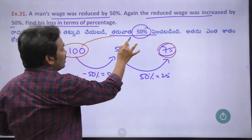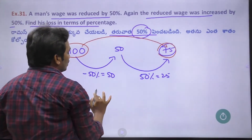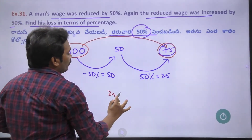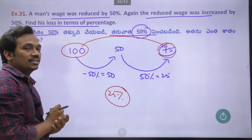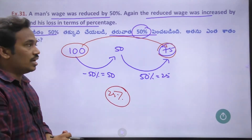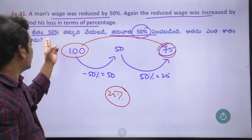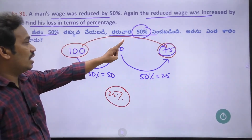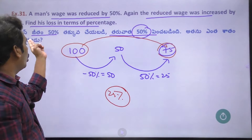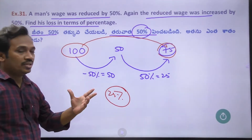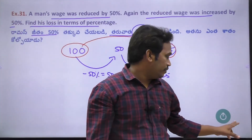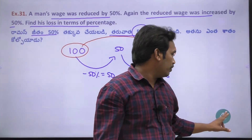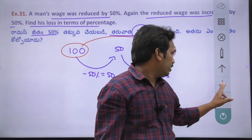So if you have the present salary 75, the loss is 25, which is a 25% loss. So this is very simple. Next one.